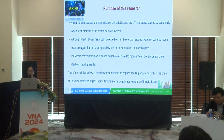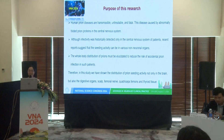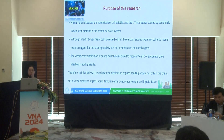Therefore, in this study we examined the distribution of prion seeding activity not only in the brain, but also in digestive organs, scalp, femoral nerve, quadriceps femoris, and thyroid tissue.